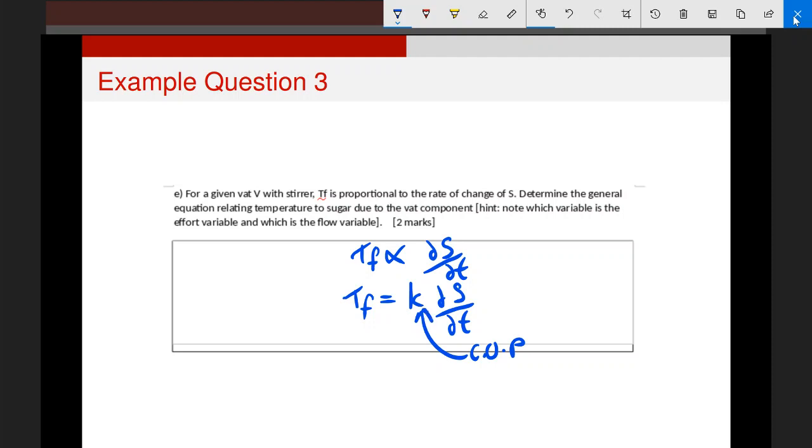And once again, I might say that that is just v, the given vat, but I would prefer it's more accurate to say that k is probably a function of v, because it's not clear to me from this question that the only important thing relating the rate of change of the sugar content to the fermentation temperature is the size of the vat. There's probably going to be other things in there as well, so I prefer to use this general k term rather than a specific v.